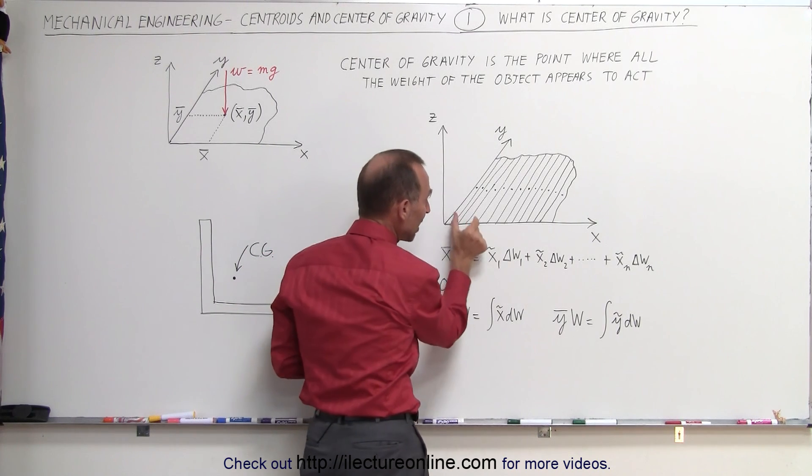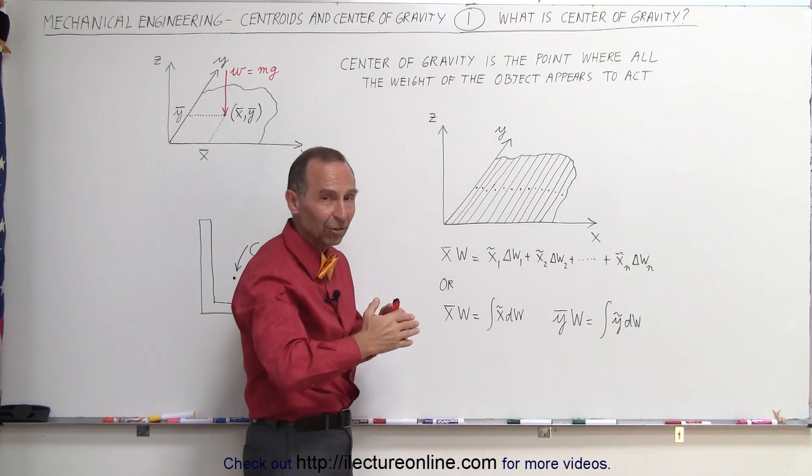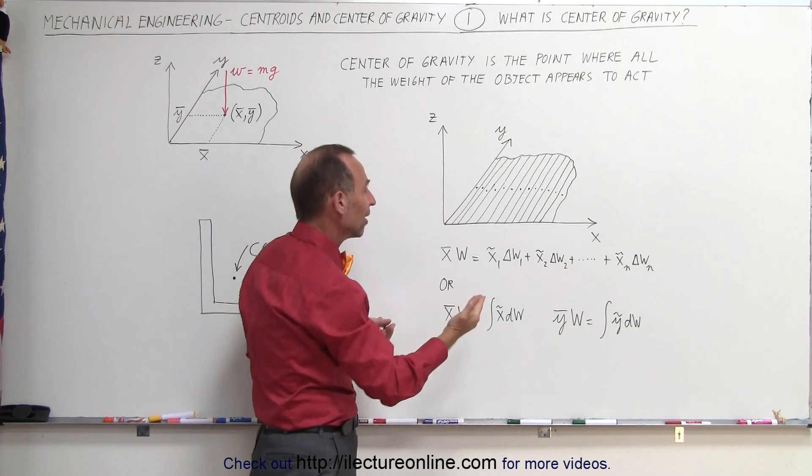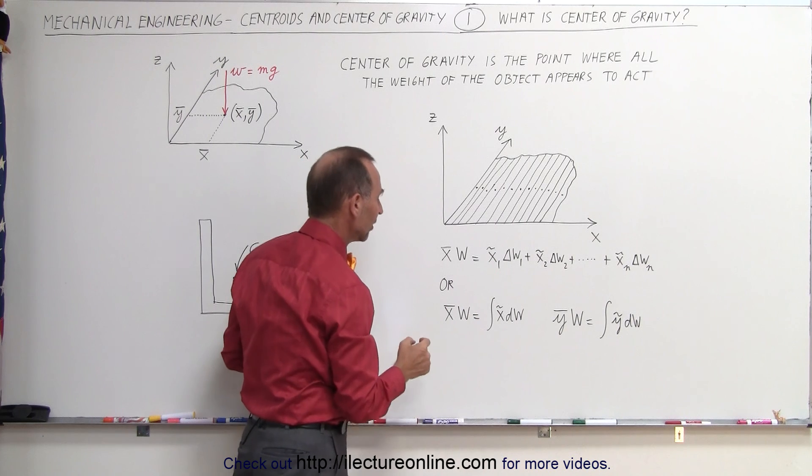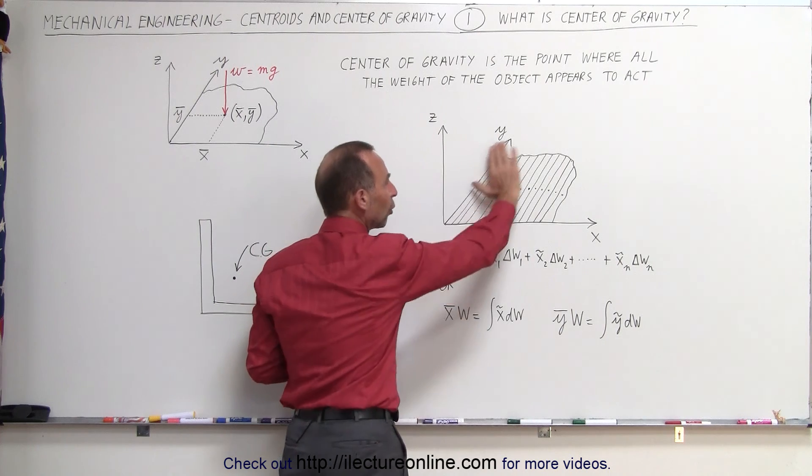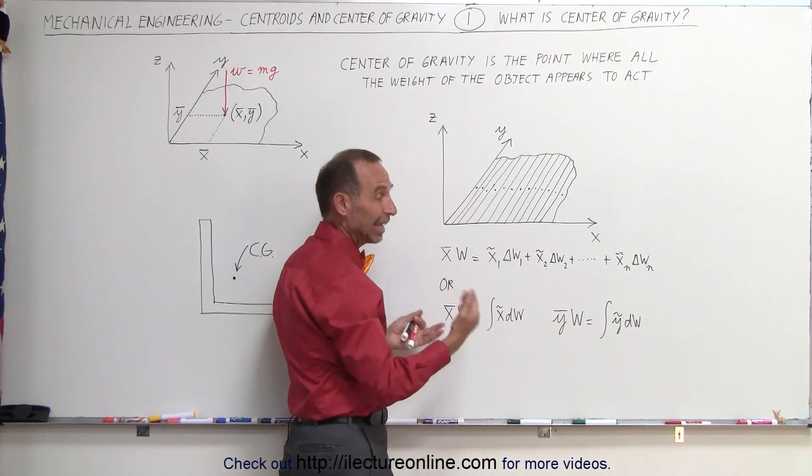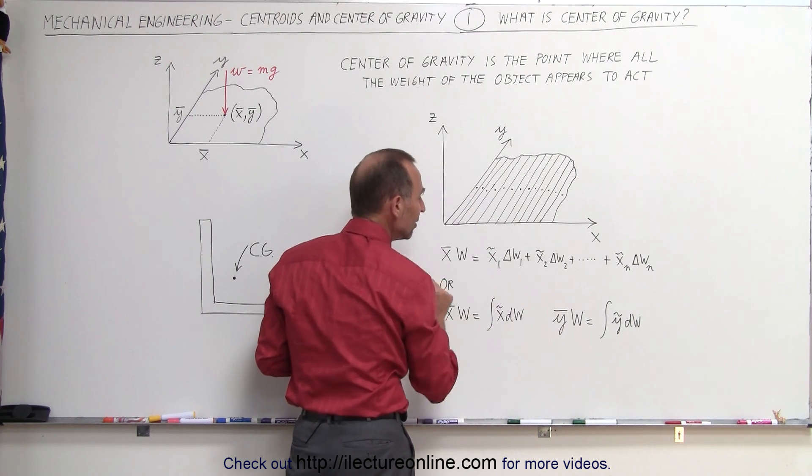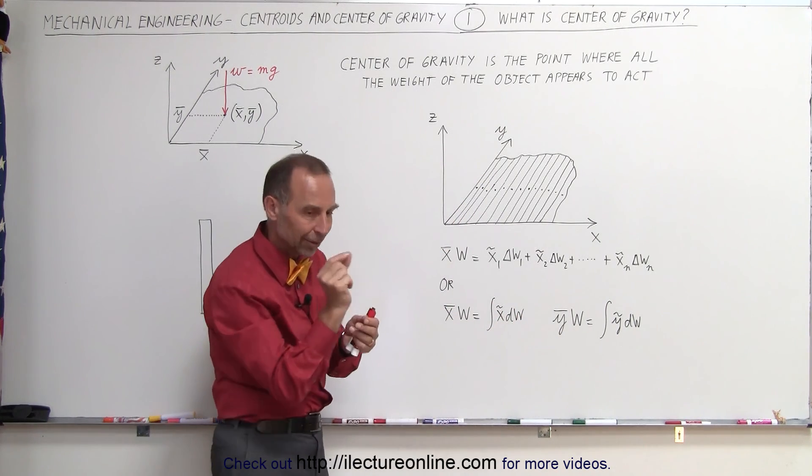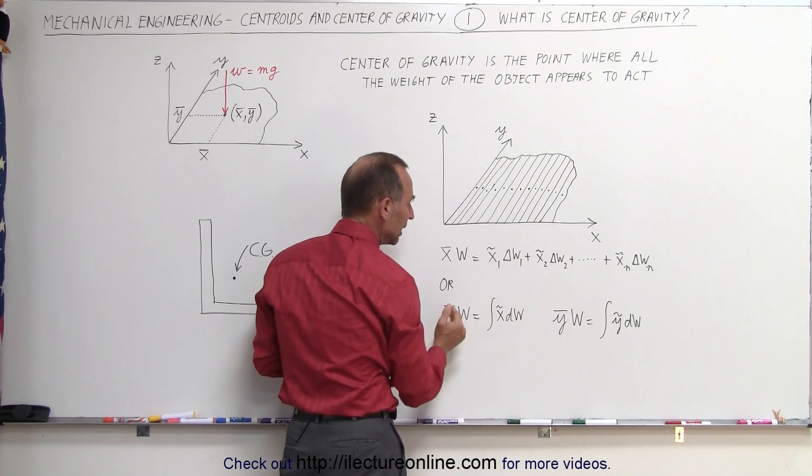Now notice that if we make these things thinner and thinner and thinner, and we increase the number of these slices in the limit as the slices become infinite, when the width of the slice becomes zero, that then turns into an integration. So we can say that if we then take the product of the x coordinate of the center of gravity of the whole object times the weight of the whole object, that is equal to the sum, the integral, of the x coordinate of each little piece times the small little slices. As dw goes to the limit to zero, as we take infinitely small little slices, add them all up, that will then equal to this.